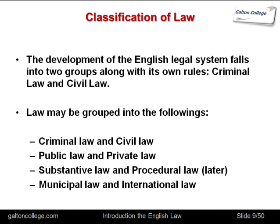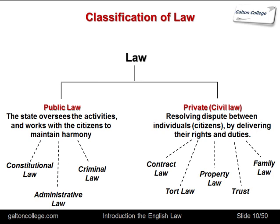Looking at UK law as a picture, we have the legal system divided into public law on the left and private law on the right. Public law — where the state oversees activities and works with citizens to maintain harmony — is made up of constitutional law, administrative law, and criminal law. Private law, concerned with resolving disputes between individuals and preventing bullying, cheating, or fraud, is made up of contract law, tort, property law, trust, and family law.